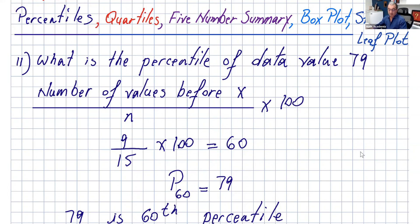Let me give you an example. For example, you take a state test and you get your result, and it says your score is 90th percentile. That means you did better than 90 percent of the people who took the test, and you did worse than 10 percent of the people who took the test. If 1,000 people took the same test, you did better than 900 people. So, these are percentiles.